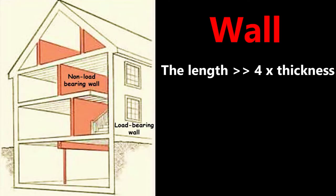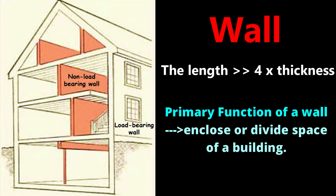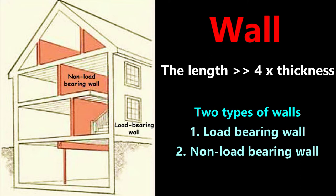A wall is a vertical member whose length, i.e. its width, exceeds 4 times the thickness — then it is considered as a wall. The primary function of a wall is to enclose or divide the space of a building to make it more functional and useful. Walls also provide support to floors and roofs.